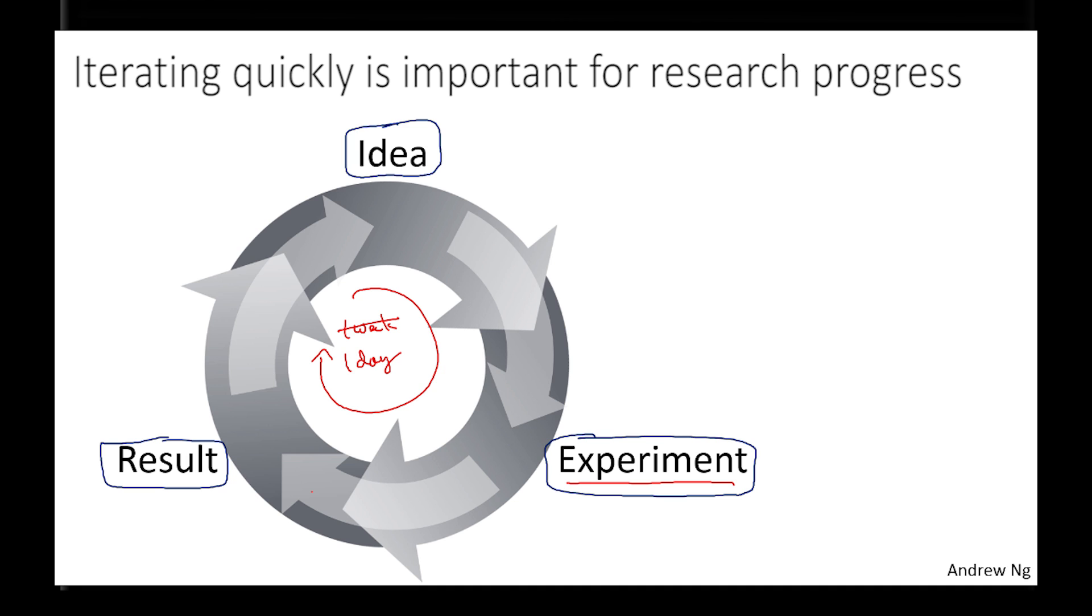So today there are definitely experiments that using the infrastructure I had a year or two ago would have taken a month to run that today we can just run in maybe a day or two. And this is really the difference between being able to try maybe a dozen ideas a year versus being able to go around that circle tens of times in a year. And this really lets you try your ideas faster and make research progress much faster.